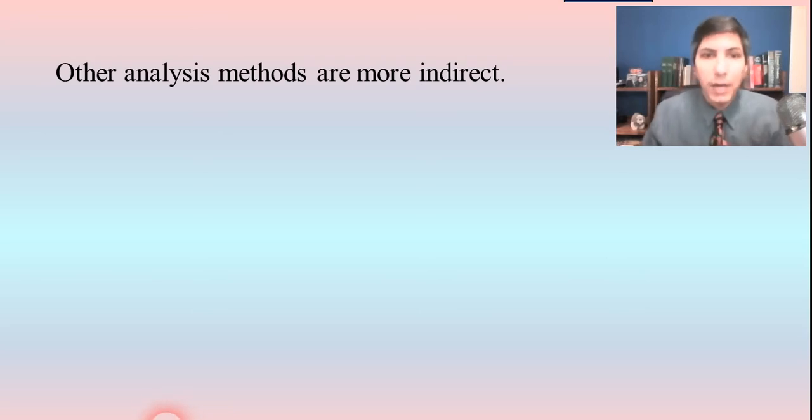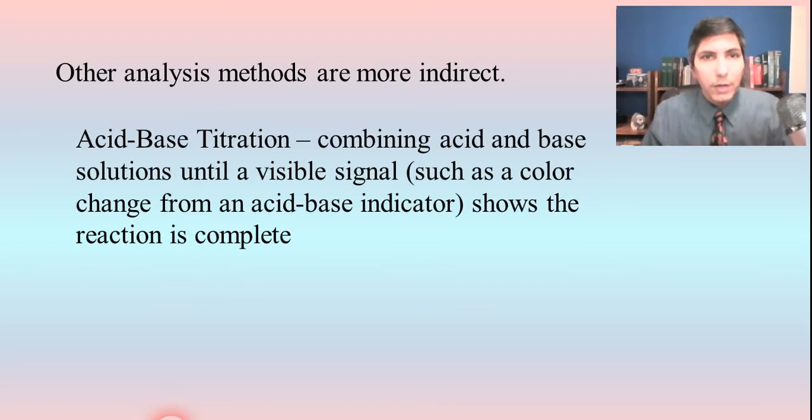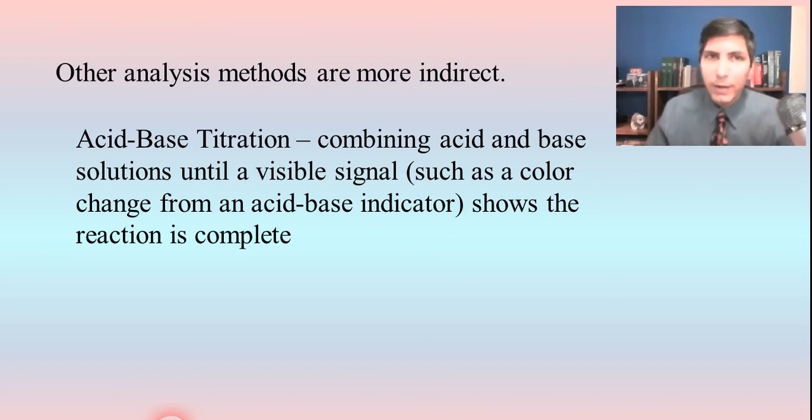Specifically spectrophotometry. Now, we know that there are other indirect chemical analysis methods. One of those is acid-base titration. We take advantage of color in this particular type of reaction. We'll talk more about acid-base titrations in a future lesson toward the end of this course.